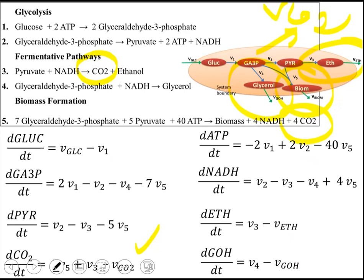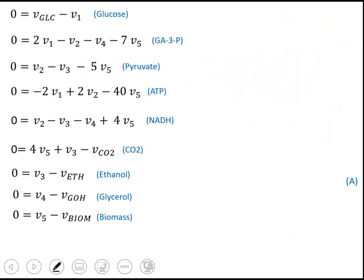We apply the steady-state assumption, so all left-hand sides are set to zero — meaning the metabolites within the system boundary do not accumulate over time. The next step is to solve this set of equations given the measured value of V_glucose.